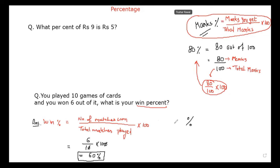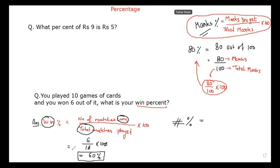Now there is a general formula. For win percentage, I write number of matches won upon total. If I have to find lose percentage, it will be number of matches I lost upon total number of matches played into 100. See here it was marks I got and total marks — isn't it? Some pattern is going on.